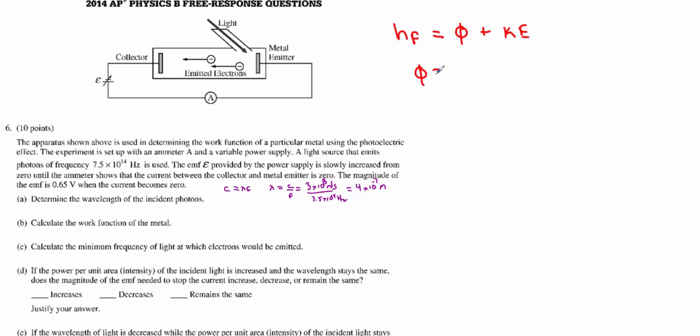We are looking for phi here, that is the work function. So ultimately the work function is going to be the incident energy, Hf, minus the kinetic energy of your electrons. Well, Hf is going to be simple enough. We know the frequency, we know Planck's constant. It is this kinetic energy bit I want to talk about.